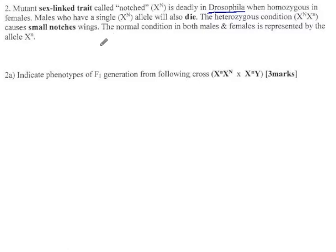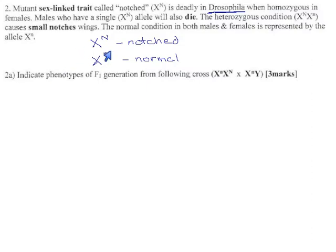The trait we're looking at affects a few things about the development of a fly, but one thing that's easy to notice is it affects the shape of their wings. X^N produces what they call a notched wing — there's a little triangular dent out of it — whereas X^n is normal. So there's this dominant trait that produces a deformed wing. In addition to changing the shape of the wings, this allele also affects the development of some of the internal organs, and it turns out if a male has this notched trait, it actually dies. Its egg never hatches, or hatches with a dead fly inside, because this allele causes some problems with its physiology. So they call this a lethal allele.